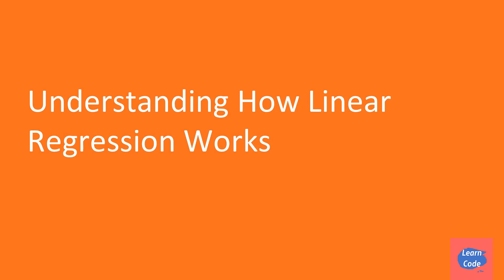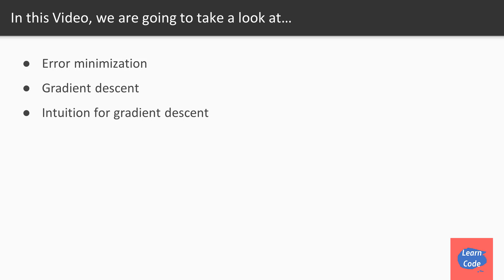Hi and welcome back. In this video on understanding how linear regression works, we'll see what is error minimization. We'll see an algorithm for error minimization called gradient descent, and we'll understand gradient descent intuitively.